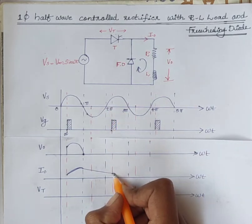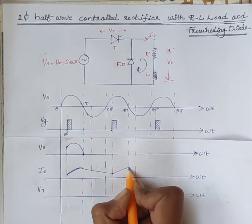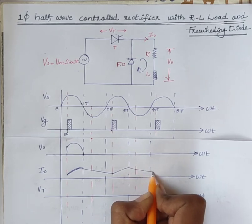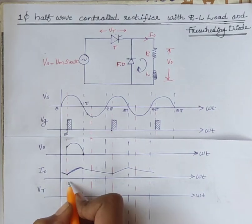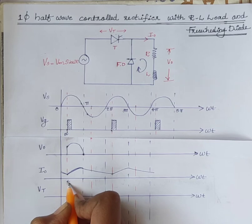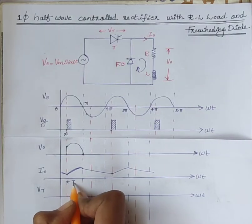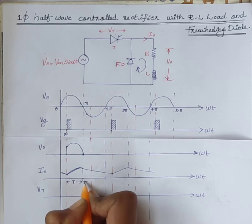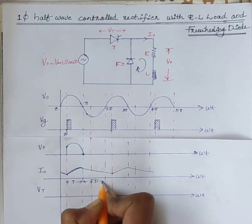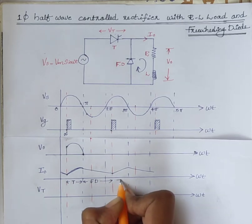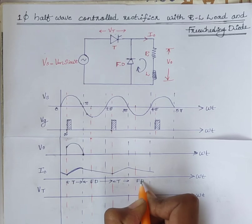Again, the output current increases gradually and then the output current is transferred to the freewheeling diode. In this portion, output current I0 flows through the freewheeling diode. During this interval, output current flows through the freewheeling diode. Again through the thyristor, then the freewheeling diode.